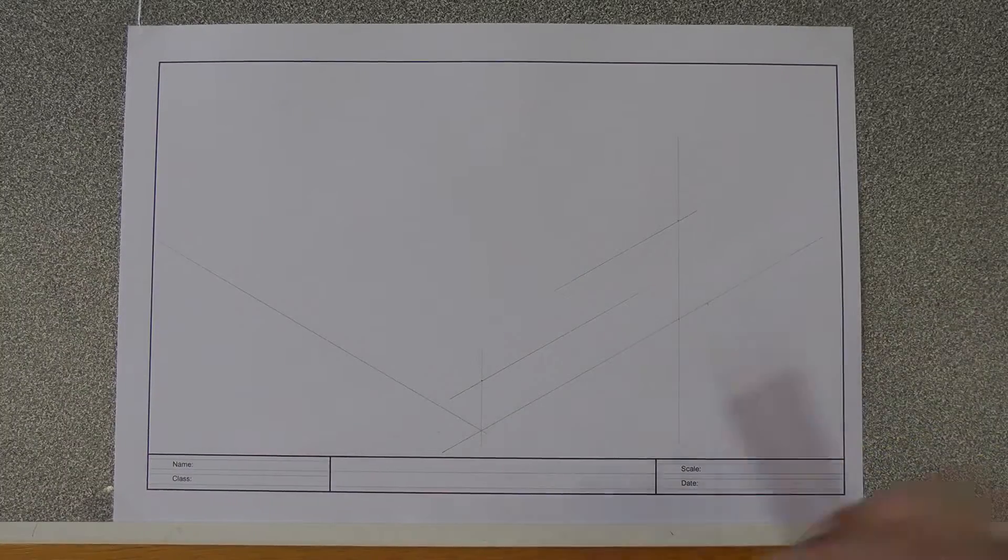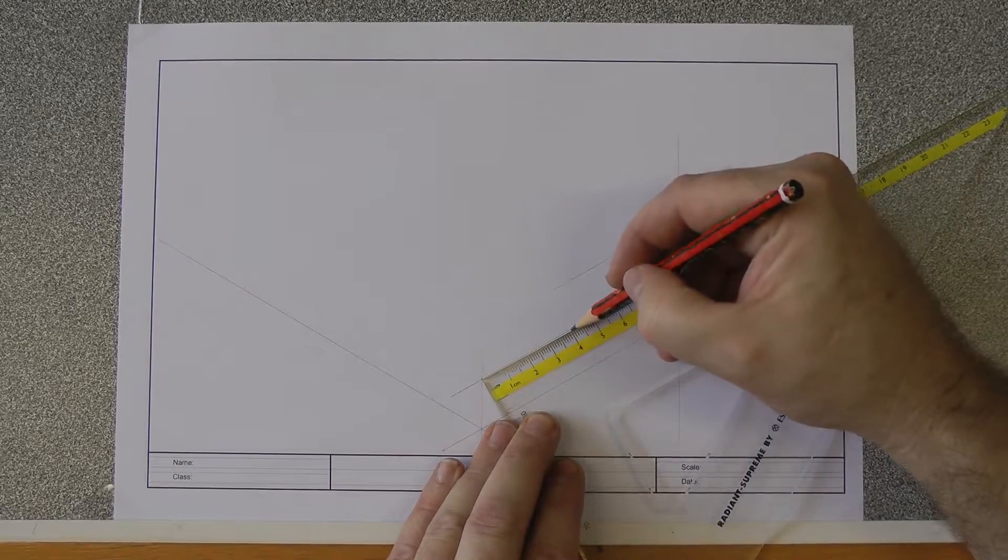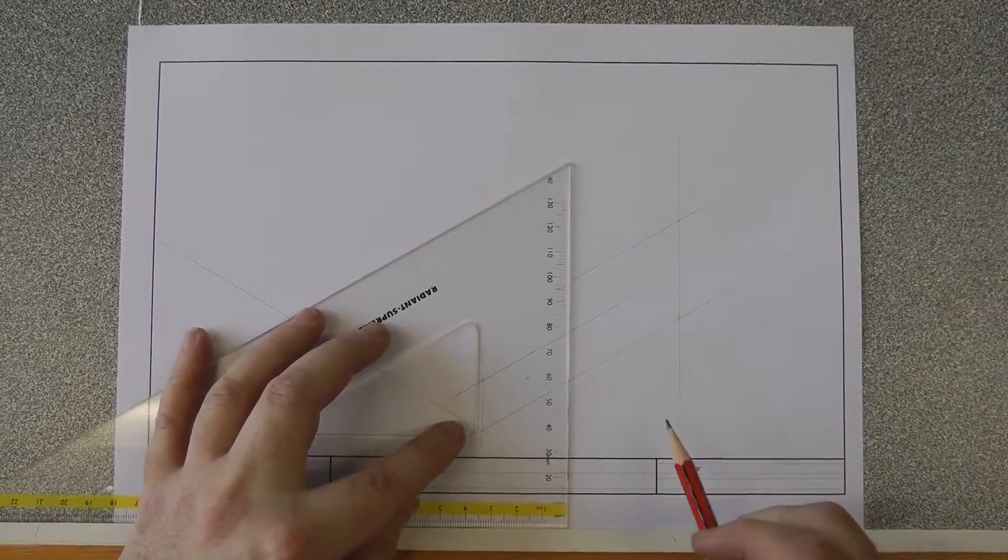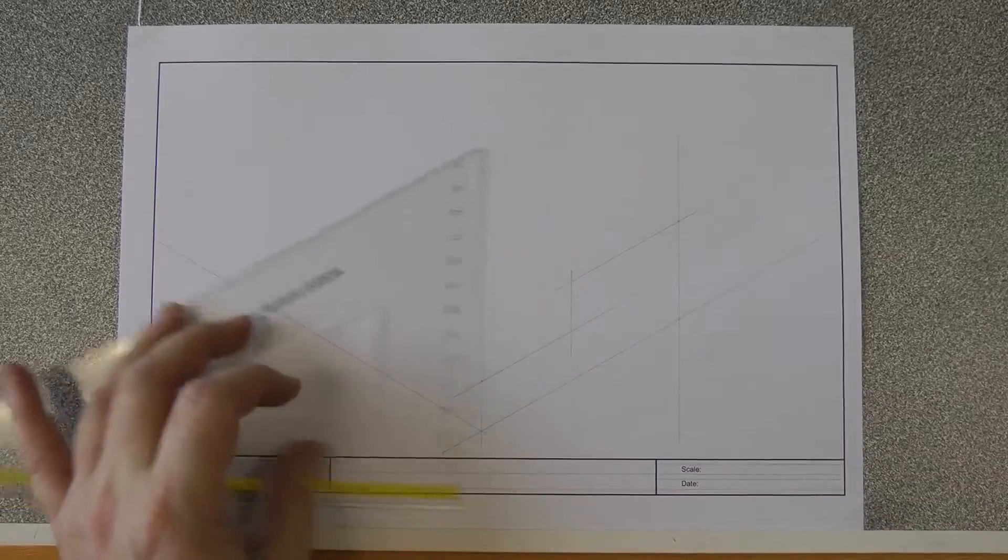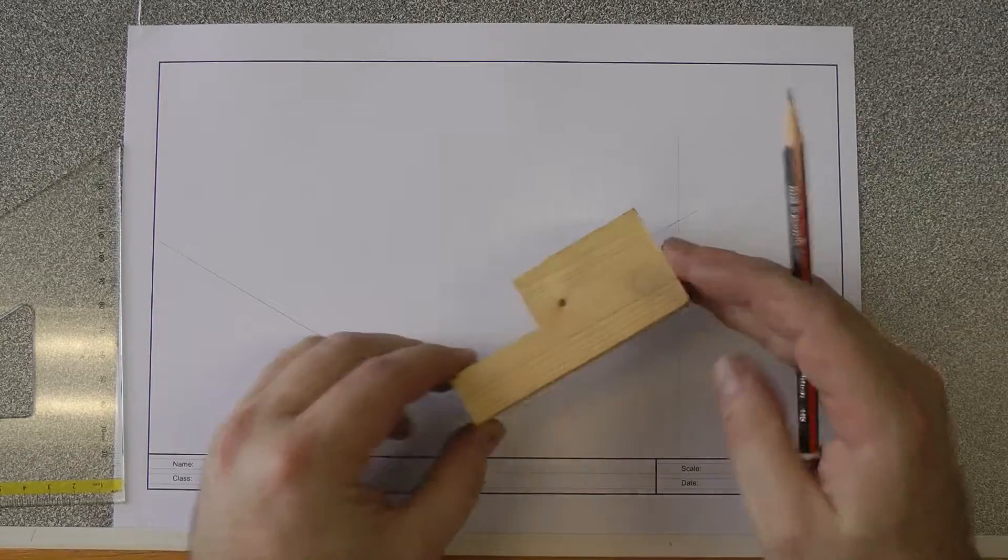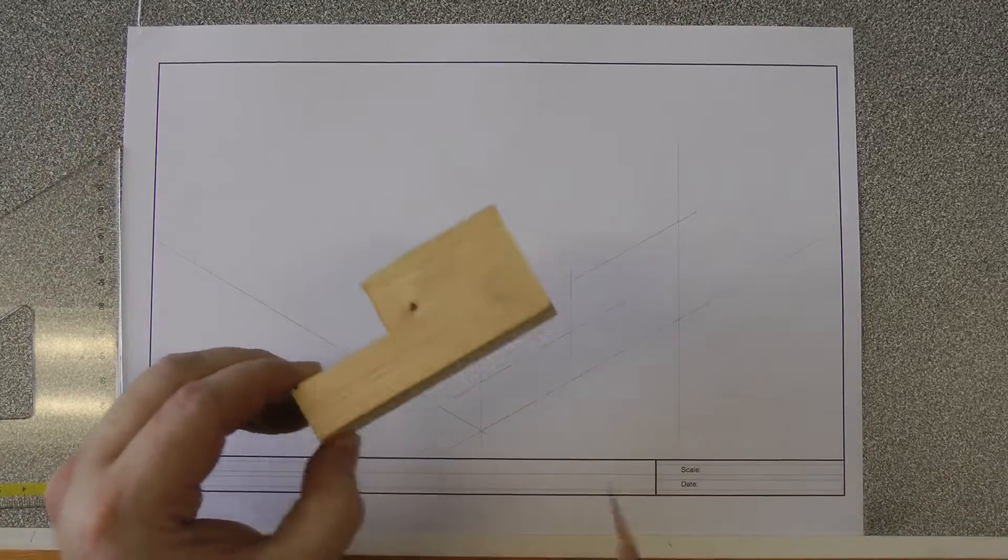Then if you remember correctly, this surface was 50 millimeters long and this was 40. It doesn't really matter which one I measure. I'm going to put my set square there, measure 40 millimeters, and then I'm going to use my set square to draw a vertical line. And that is my front shape. So this shape here is sitting there and obviously it's been rotated so that these lines are vertical, not right angled.